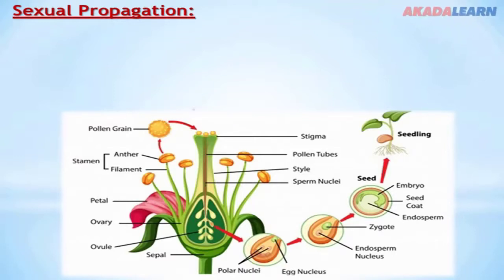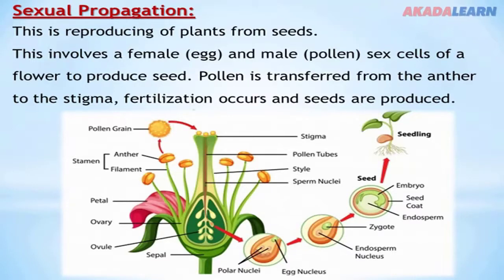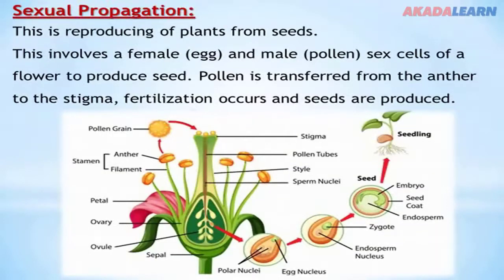Looking at this picture of the flower, this method involves a female egg and a male pollen — sex cells — for the flower to produce seed. The pollen is transferred from the anther to the stigma. The stigma is the female part of the plant flower, while the anther is the male part. This process is known as pollination. At the end of pollination, fertilization takes place, the seed is produced, and that seed is used for propagation of crops. Because of this, this method is considered sexual propagation.